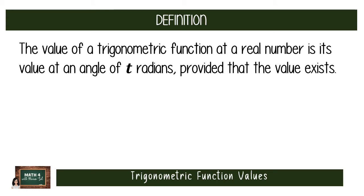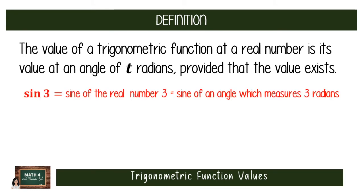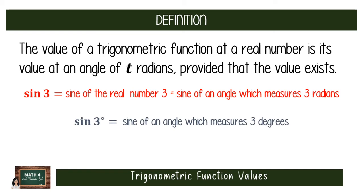So when we say we want to evaluate sine 3, it means two things: the sine of the real number 3, and the sine of an angle measuring 3 radians. That is different from sine of 3 degrees, which is the sine of an angle measuring 3 degrees — that angle is way smaller than an angle measuring 3 radians. So sine of 3 is not equal to sine of 3 degrees. This is very important because many think degrees is the default unit since it's more familiar.